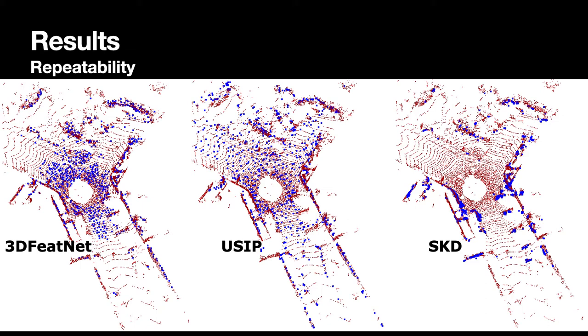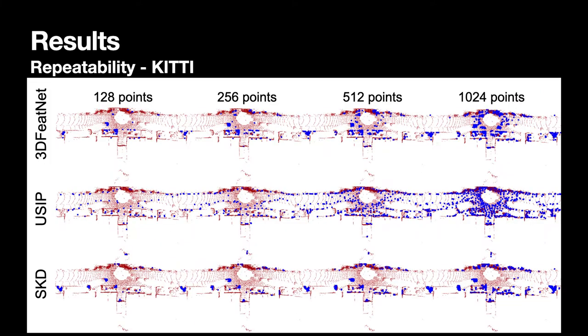Now let's look at what happens when we increase the number of extracted keypoints. Here, in each column, we have extracted a predefined number of keypoints for each method, from 128 keypoints to 1024 keypoints. By increasing the number of keypoints, we would expect that the new keypoints would appear in similar locations as the old ones. You can see that our method does not choose the ground to define keypoints and is not affected by the density of the point cloud.